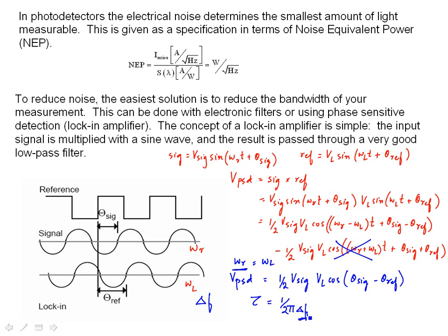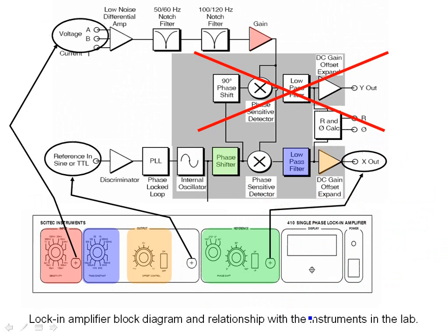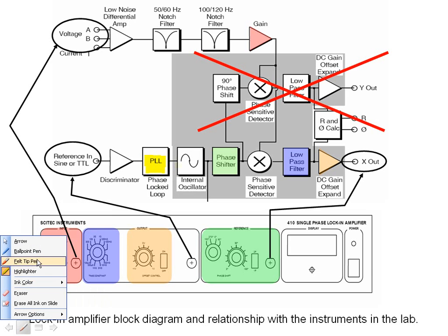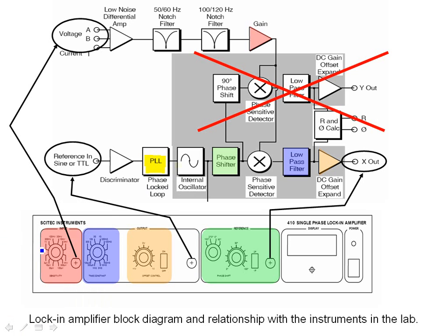Let's take a look at the block diagram of the lock-in we have in our lab, and this is a single-phase lock-in. I will be talking about what a single-phase or dual-phase lock-in is. Now, an important block in this block diagram is the PLL, and this PLL, which is the phase lock loop, it just tracks the reference phase so that theta, the phase of the signal is equal to the phase of the reference. And the phase difference can be made zero by the phase shift knob we have on the front panel.